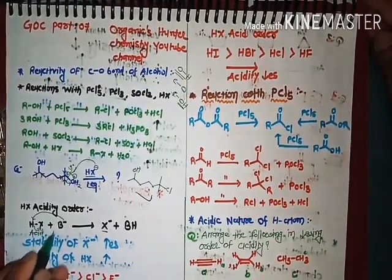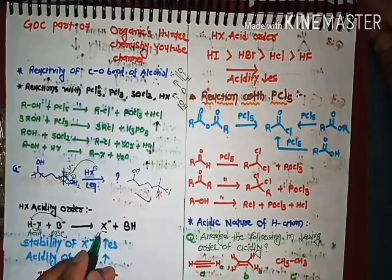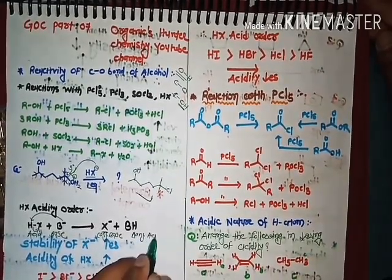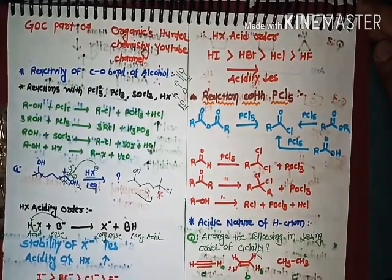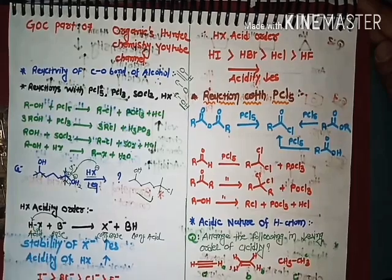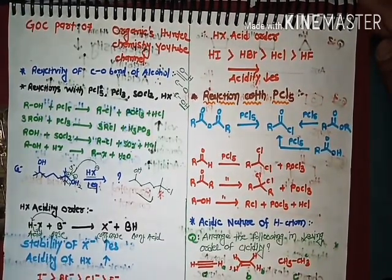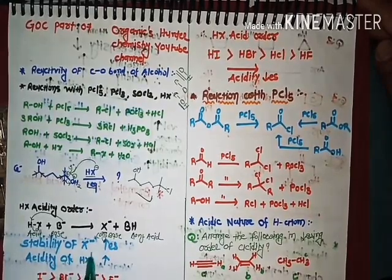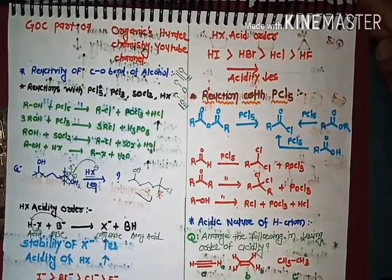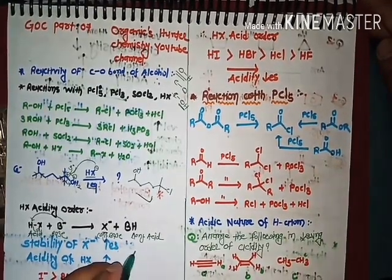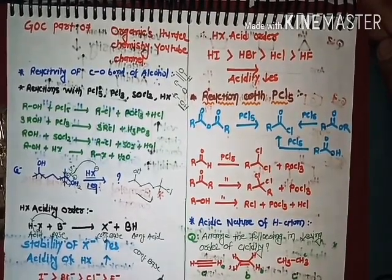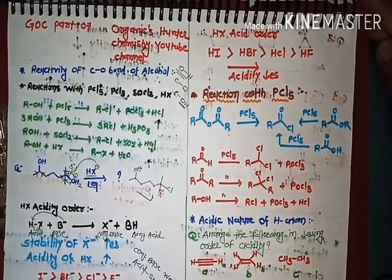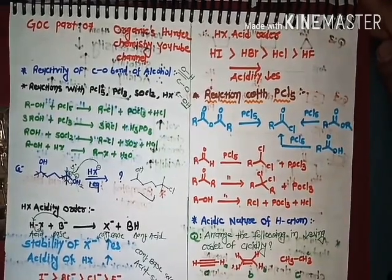This is my acid and this is my base. What forms from the acid is called the conjugate base, and what forms from the base is called the conjugate acid. The more stable the conjugate base, the more easily it releases H+, and the more acidic the acid. So greater stability of X minus means greater acidity of HX. In other words, the weaker the conjugate base, the stronger the acid.